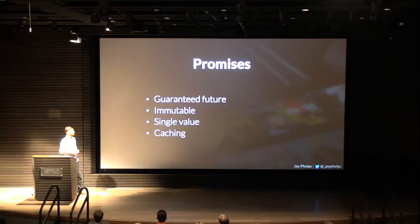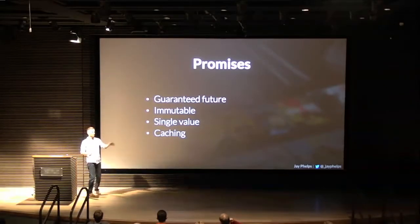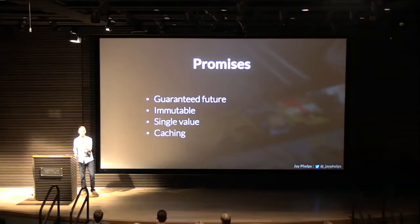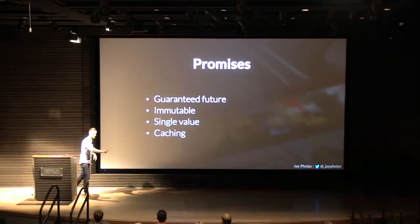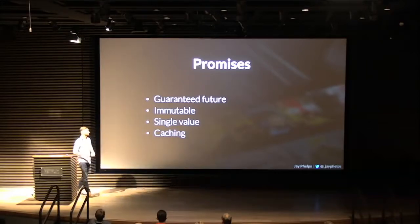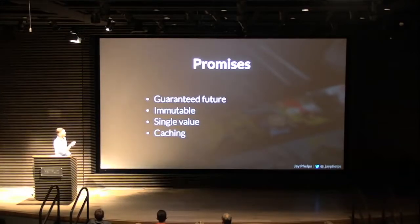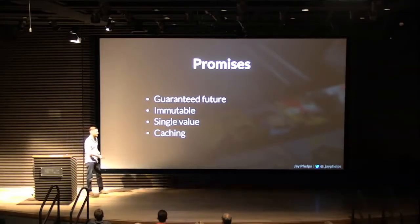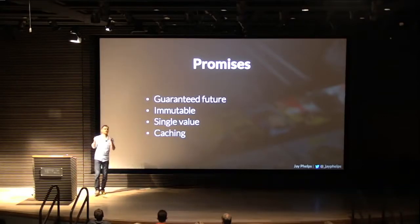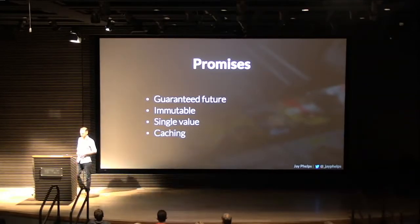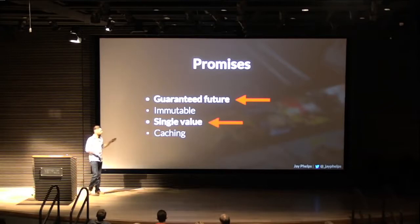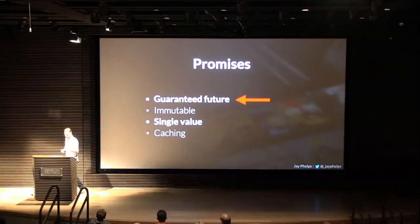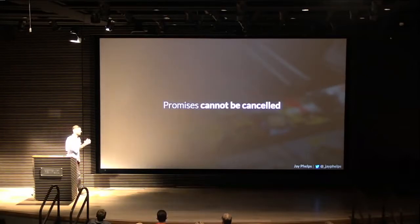Let's look more closely at promises. They have a guaranteed future, which means once you make the promise, there's nothing you can do to stop it — it will succeed and call the success callback, or fail and call the fail callback. There is no cancellation. They're immutable, they represent a single value, and they have inherent caching: if you create the promise and listen to it multiple times, you'll get the same value each time.